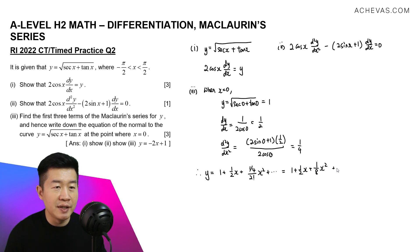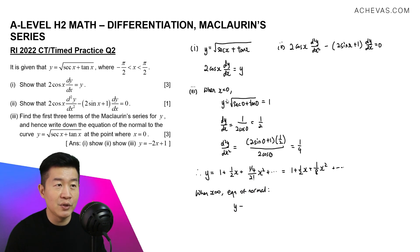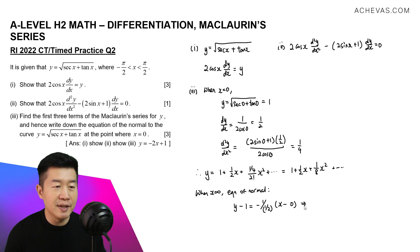We are also supposed to write down the equation of the normal when x equals 0. The equation of the normal is y minus the y-coordinate at x = 0, which is 1, equals the gradient of the normal, which is negative 1 over dy/dx. So negative 1 over (1/2) equals minus 2. Then x minus 0. This gives y minus 1 equals minus 2x, so y equals minus 2x plus 1.